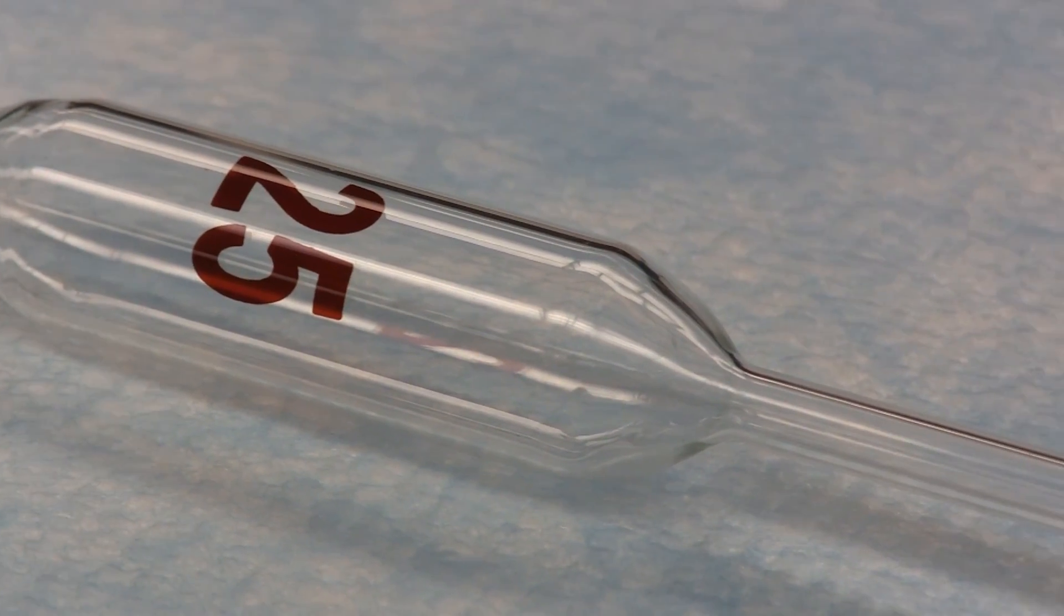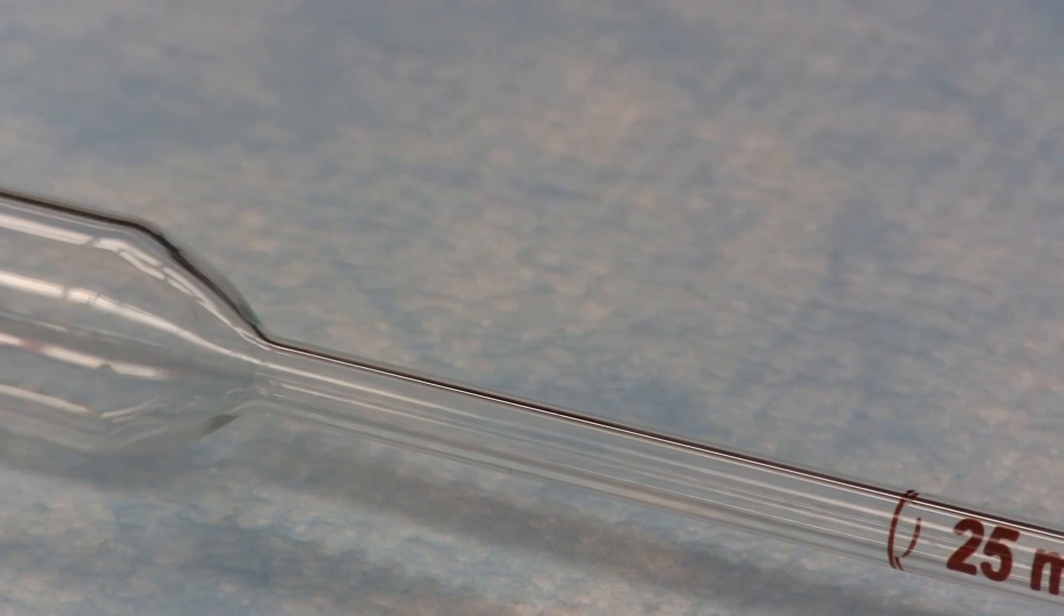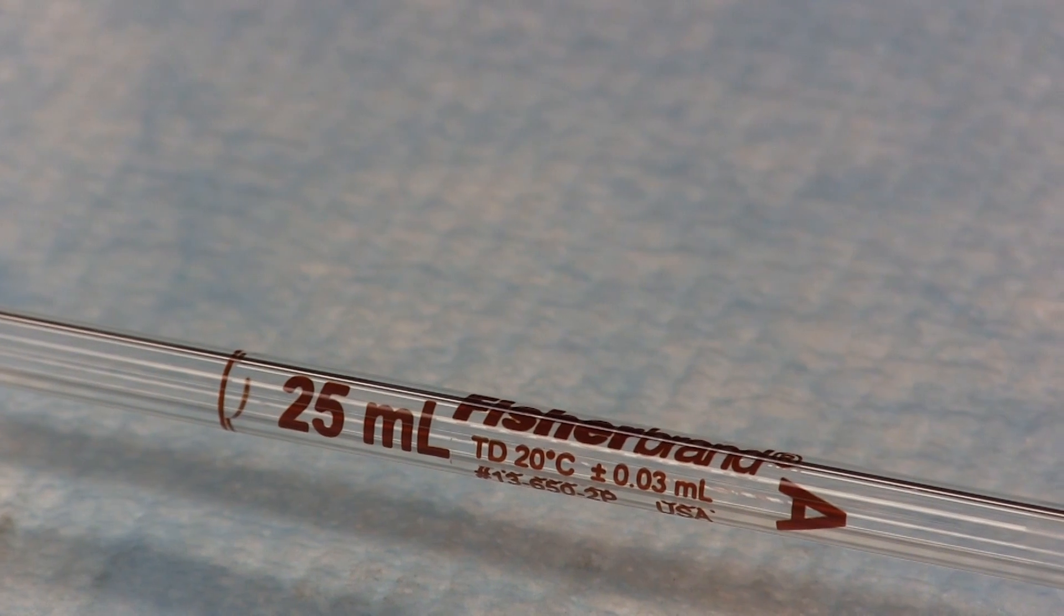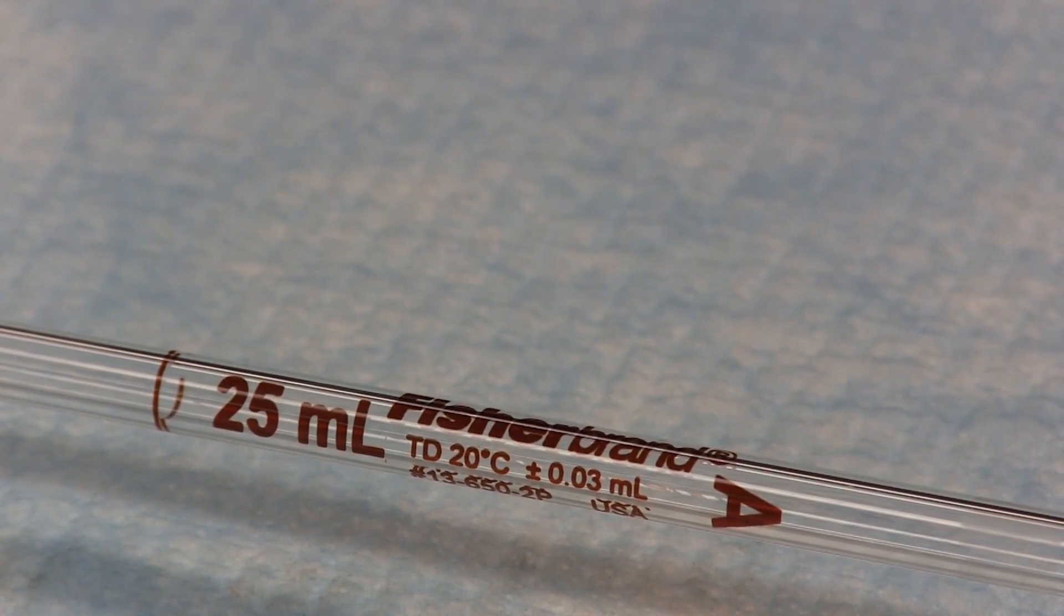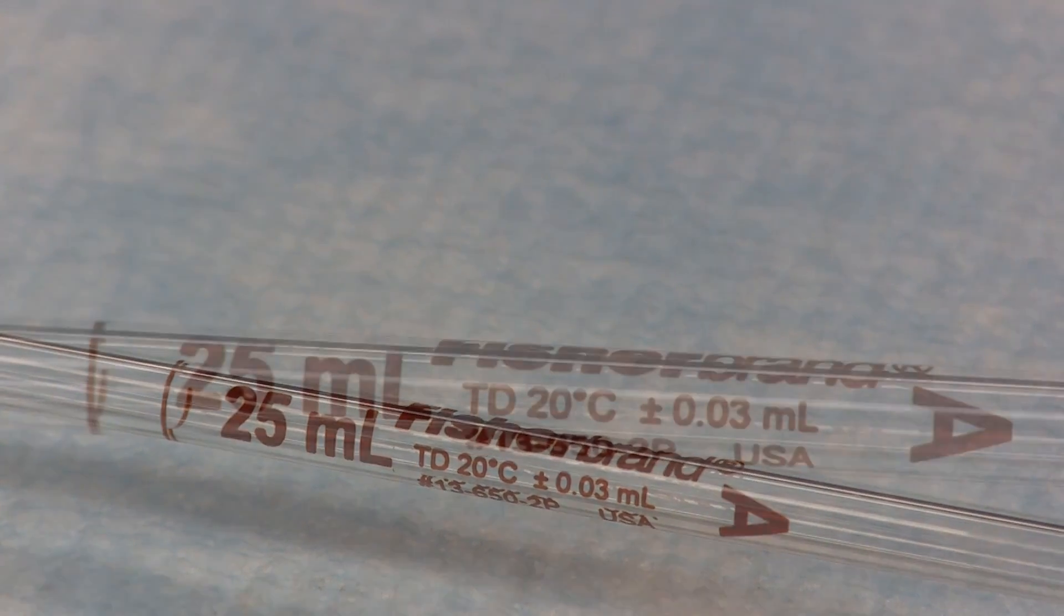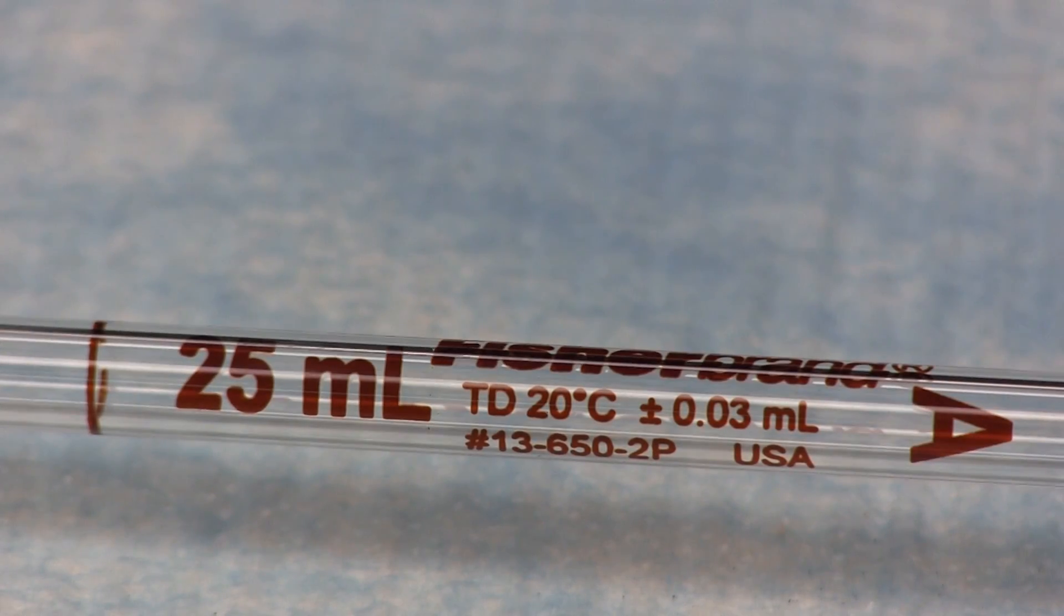This pipette is a 25 milliliter volumetric pipette and as shown on the upper stem it's calibrated to deliver 25 milliliters of a liquid. The precision as indicated by the manufacturer is plus or minus 0.03 milliliters.